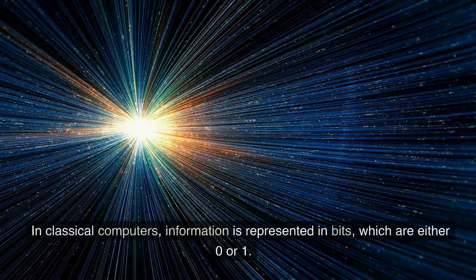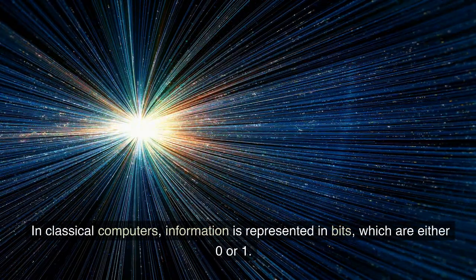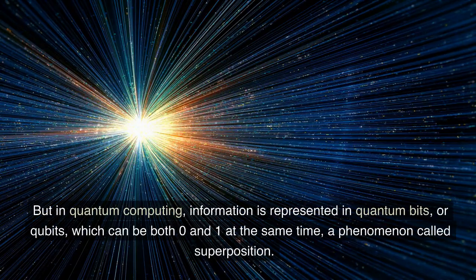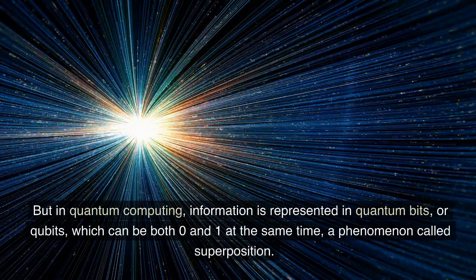In classical computers, information is represented in bits, which are either zero or one. But in quantum computing, information is represented in quantum bits, or qubits.